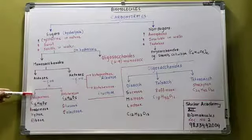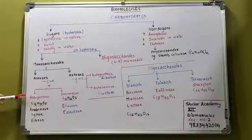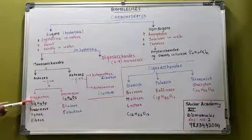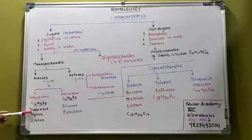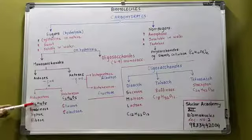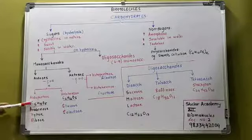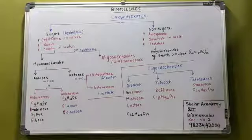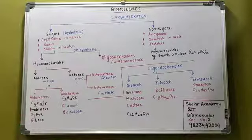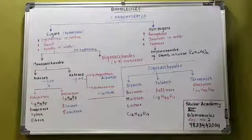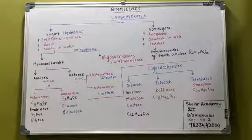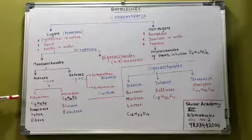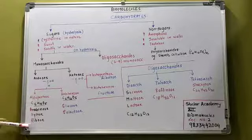They are further classified depending on the number of carbon atoms. Aldo pentose: the functional group is aldehyde and the number of carbon atoms are 5. Their molecular formula is C5H10O5. Examples are arabinose, xylose, and ribose — these are aldo pentoses.